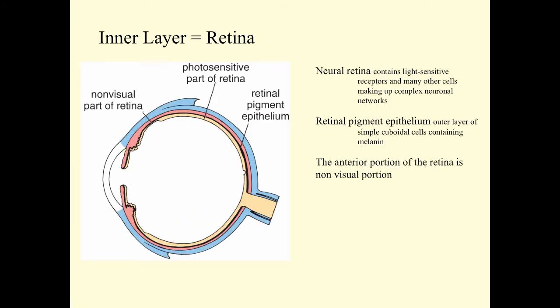The inner layer of the eye is the retina. The neural retina consists of light-sensitive receptors and many other cell types, so the retina is made up of a complex neural network. And then there's a retinal pigment epithelium. It's the outer layer of the retina. It's a simple cuboidal cell lining, and these cells contain melanin. The anterior portion of the retina is the non-visual portion of the retina, and the visual portion ends at a structure called the ora serrata. We'll talk about that in a few minutes.